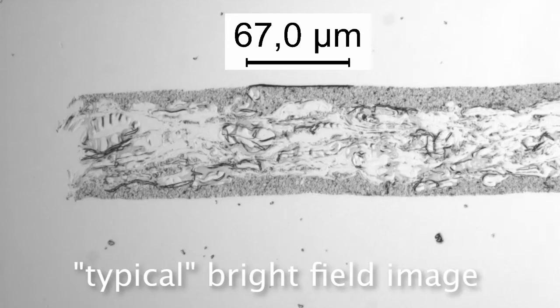In bright field imaging, what you do is collect all the transmitted light that passes through the sample — all the light that is not absorbed or reflected. That gives you the classic microscope image you may have seen before. This technique works very well if the sample has high absorption of features, because then you will have good contrast.